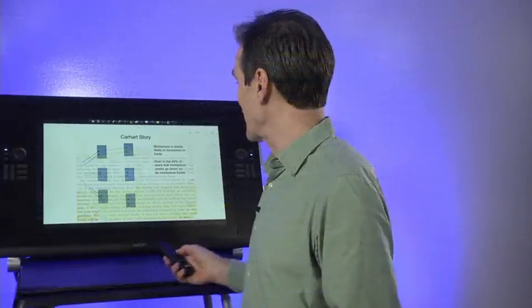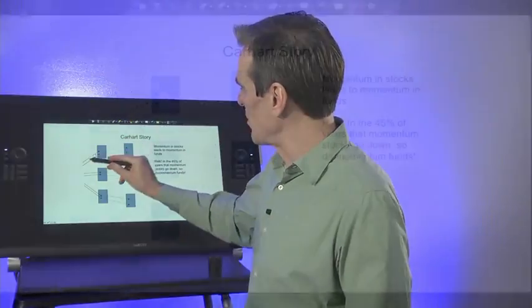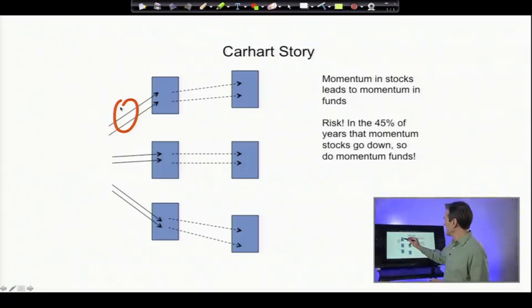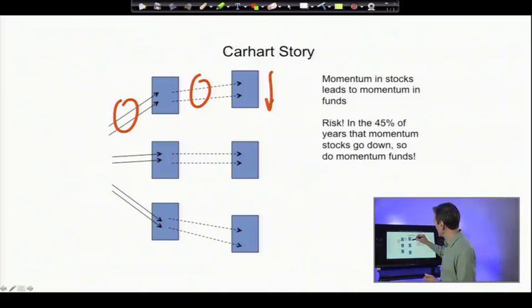I made a picture version of the Carhart story. The winning funds are funds that happen to hold stocks that went up in the previous year. If you held stocks that went up in the previous year, those stocks are likely to keep going up in the next year, a little bit. That's the momentum, with, of course, a lot of risk. Some years they go up, some years they go down. But on average, they go up a little more than they go down.